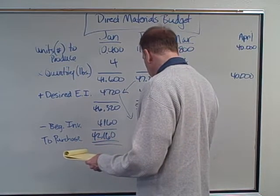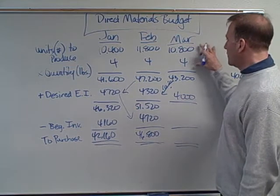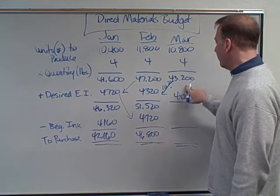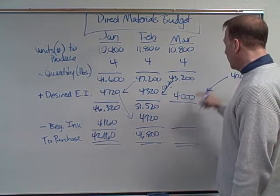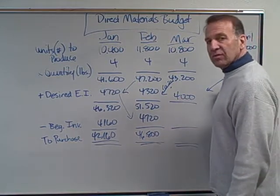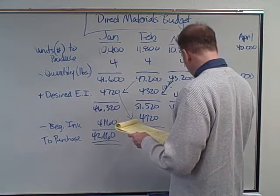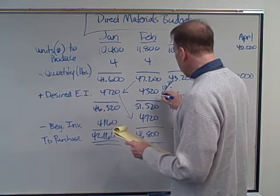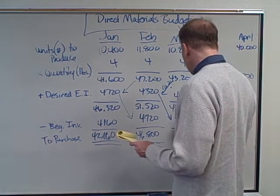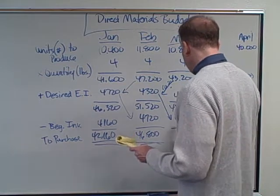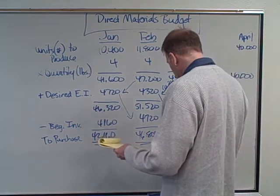For March: 10,800 times four equals 43,200 pounds. Desired ending inventory is 4,000 — that's 10% of April's 40,000. Total needs are 47,200. Beginning inventory is February's ending inventory of 4,320. Subtracting that out gives us 42,880 pounds to purchase in March.